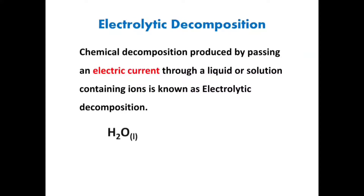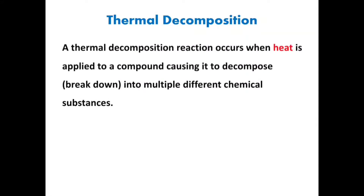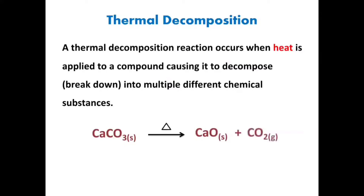Thermal decomposition: a thermal decomposition reaction occurs when heat is applied to a compound, causing it to decompose into multiple different chemical substances. For example, CaCO₃ (calcium carbonate) upon heating — the triangle symbol above the arrow indicates the reactant is undergoing heating — decomposes into CaO (calcium oxide) plus CO₂ (carbon dioxide).